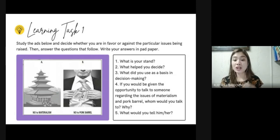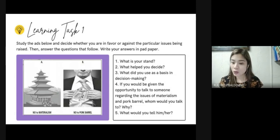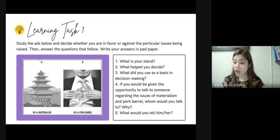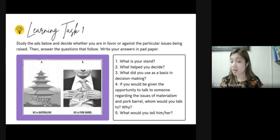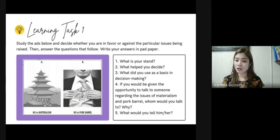Some suggest materialism is a good thing — that material consumption helps raise the level of civilization and makes life better — while others say it leads to negative feelings like self-centeredness and unhappiness. The second picture is about pork barrel, which negatively refers to politicians spending taxpayer money on their constituents primarily to generate political support. While some say pork barrel is important to help people in need locally, it also opens the door for corruption, where the budget meant for beneficiaries goes to the pockets of corrupt officials.